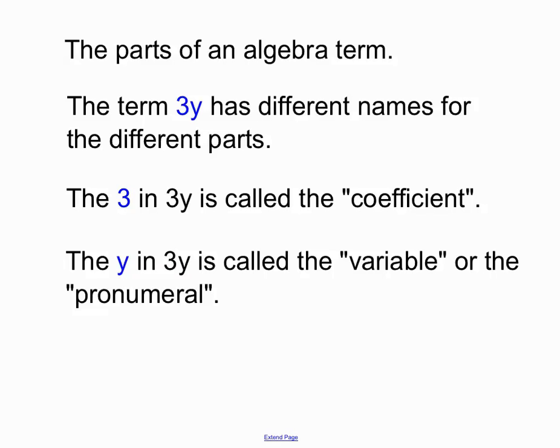And the letter in an algebra term is called a variable, or another name for it is the pronumeral. It's called a variable because the value of the y in 3y varies. Sometimes it could have a value of 2 or 10 depending on the question. So we call it a variable.